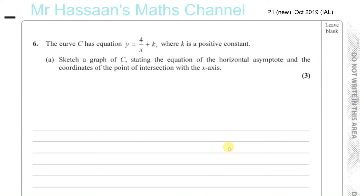Question number 6 from October 2019, the International A-Level P1 paper. The curve C has equation y equals 4 over x plus k, where k is a positive constant. Sketch a graph of C, stating the equation of the horizontal asymptote and the coordinates of the point of intersection with the x-axis.